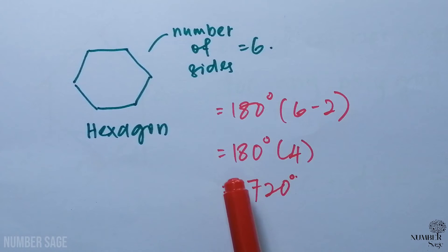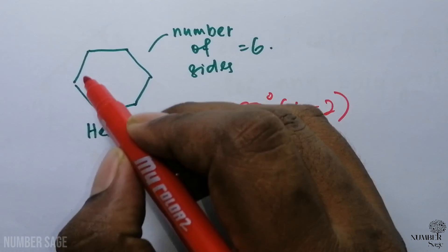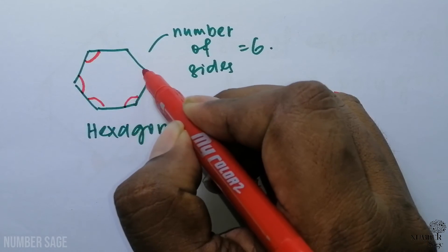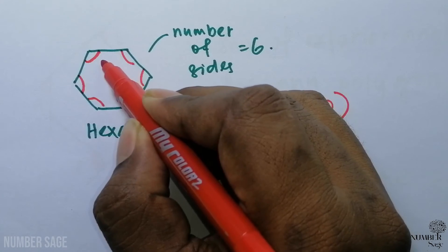So from this we can say the sum of the interior angles—in this case these are the interior angles for the hexagon—so when you sum all these angles, it should be equivalent to 720 degrees.